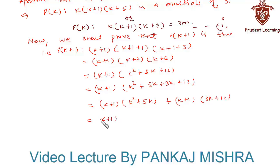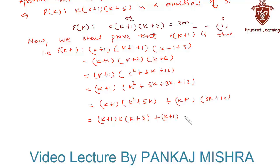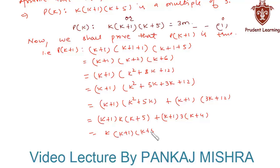This equals (k+1) times k(k+5), taking k common from the first two terms, plus (k+1) times 3(k+4), taking 3 common from the last two terms. This can also be written as k(k+1)(k+5) plus 3(k+1)(k+4).